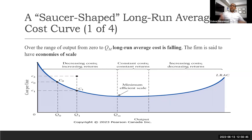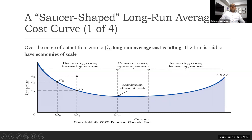When cost is increasing but output is not matching proportionally, that is decreasing returns. The black dot on the graph represents an unattainable point. C1 is attainable because the curve divides the area into attainable and unattainable regions. The minimum efficient scale is the point on the long run average total cost curve where cost reaches its minimum.